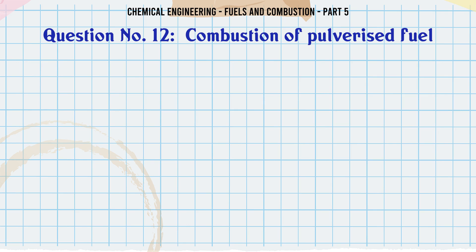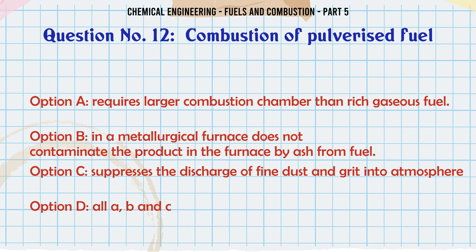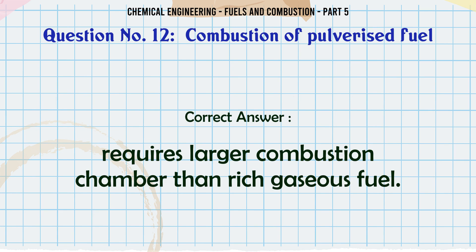Combustion of pulverized fuel: A. Requires larger combustion chamber than rich gaseous fuel. B. In a metallurgical furnace does not contaminate the product in the furnace by ash from fuel. C. Suppresses the discharge of fine dust and grit into atmosphere. D. All A, B and C. The correct answer is requires larger combustion chamber than rich gaseous fuel.